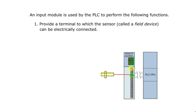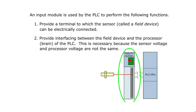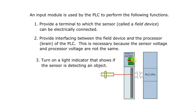Various sensors can be connected to the input module. Here we are connecting a sensor to the third terminal of the PLC's input module. Whenever the sensor is activated — when an object comes in front of it — the LED on the input module glows. You can observe the first, second, and third LEDs, with the third LED glowing because that sensor is sensing the object. The input module also provides an interface between field devices and the PLC CPU, and turns on an LED indicator to show when a sensor is detecting an object.